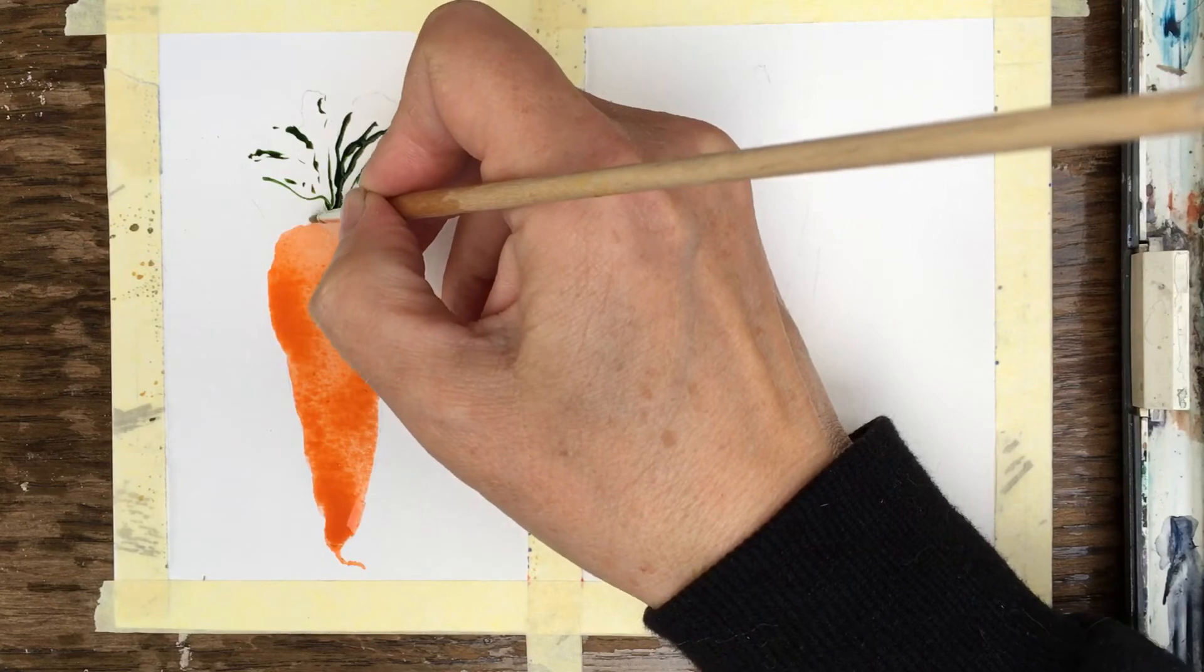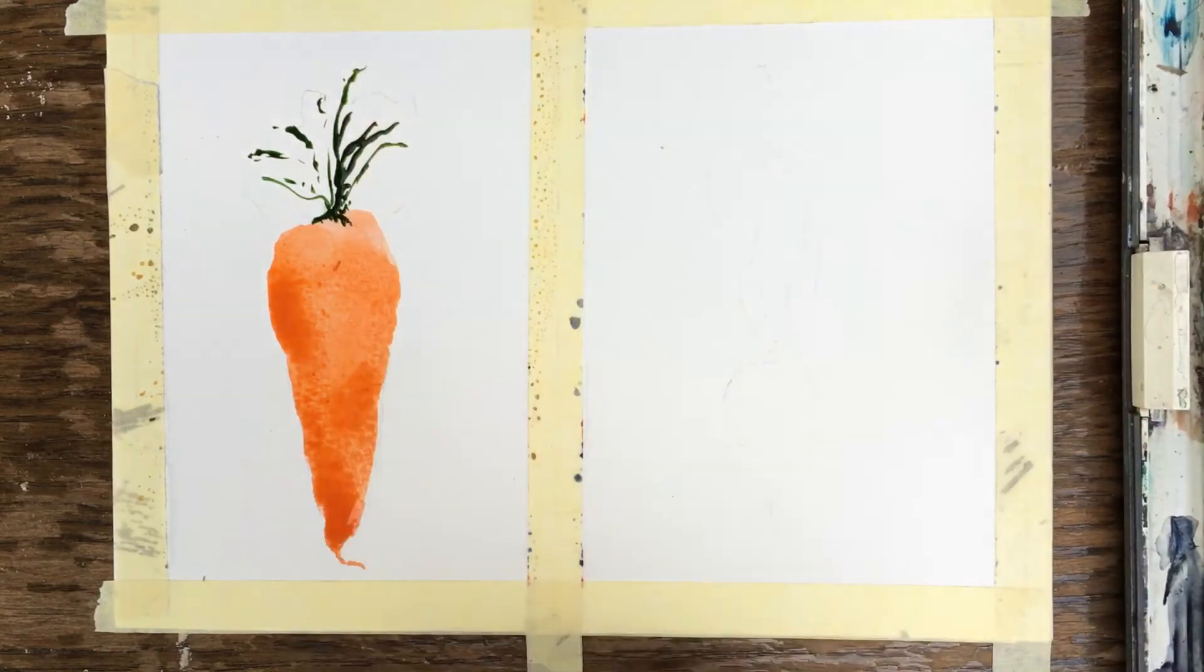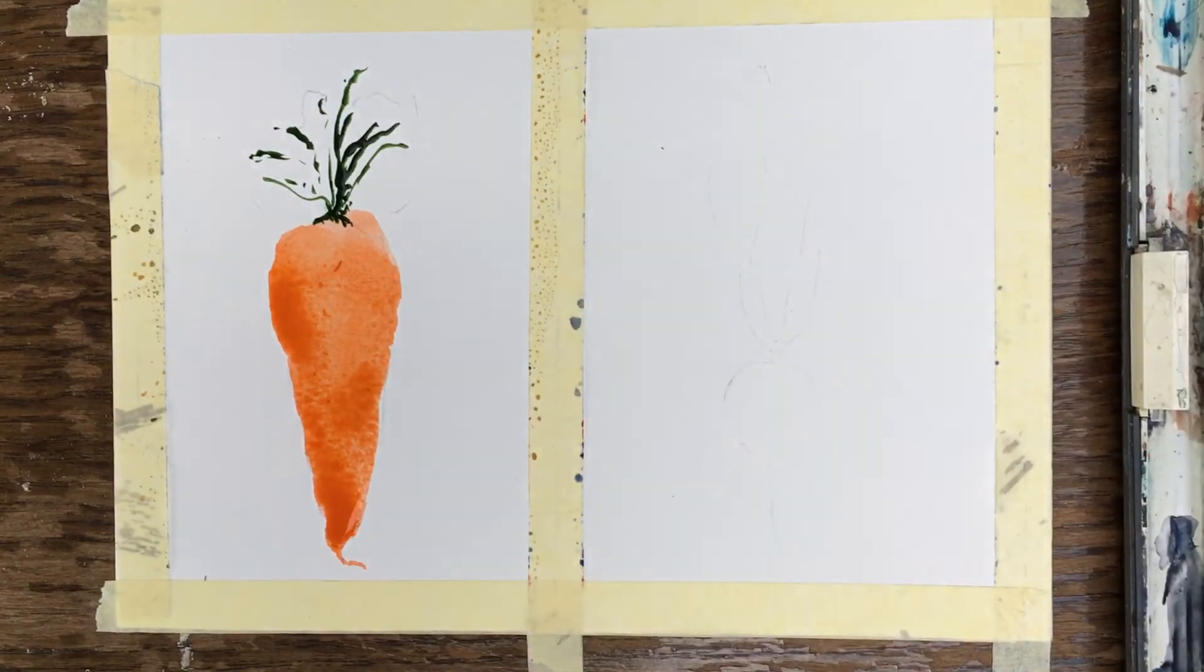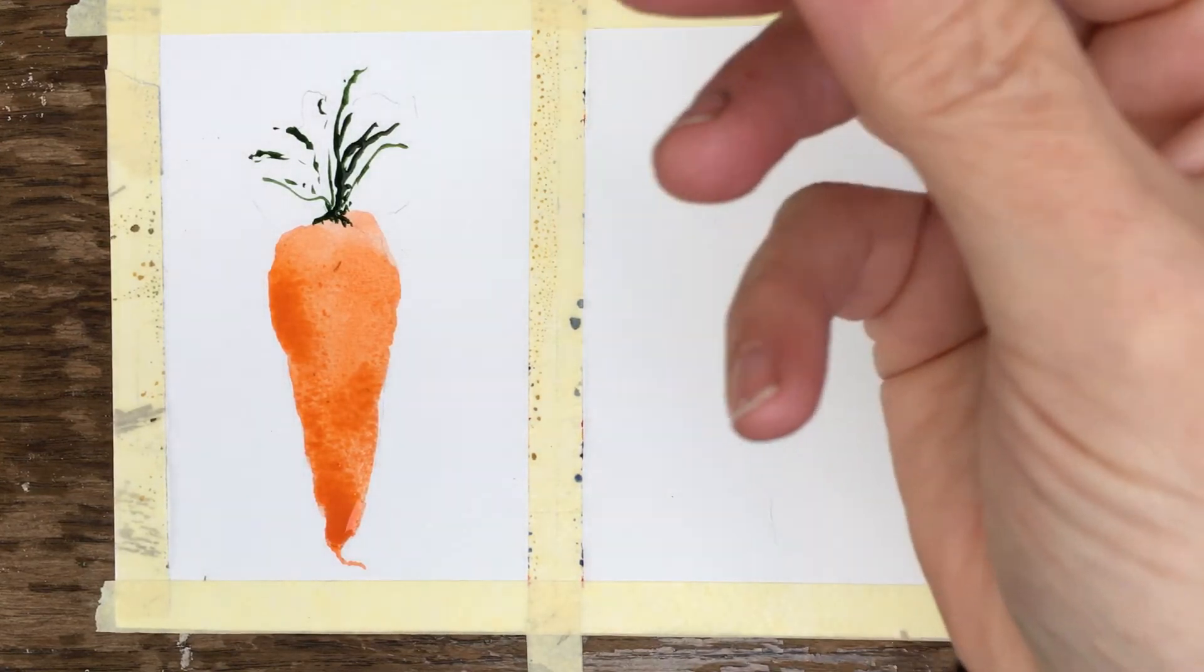And if it goes into the carrot, that's okay. Nice and loose, wobbly, shaky marks. And then I'm going to take a slightly larger, rounder brush, this one here.